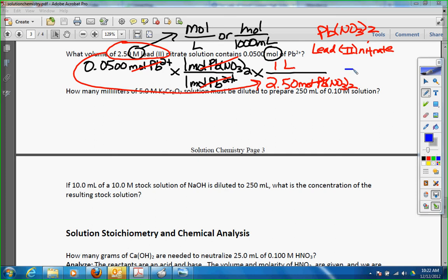Alright, our answer is when we do that, tough one, 0.02 liters of Pb NO3 2. Okay, you got to have those sig figs that are correct. Alright, let's try the next one.